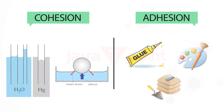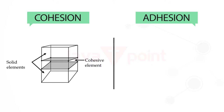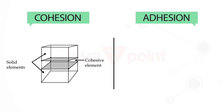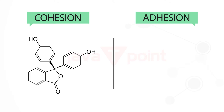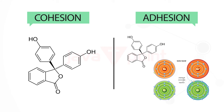Cohesion is found in elements, while adhesion is found in compounds. Cohesion is responsible for chemical bonding. Adhesion is responsible for chemical bonding, the formation of compounds, new products, etc.